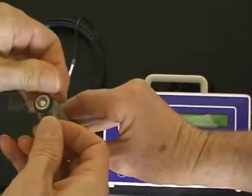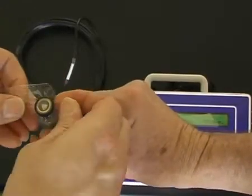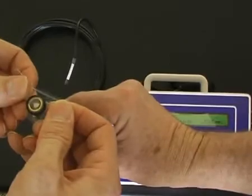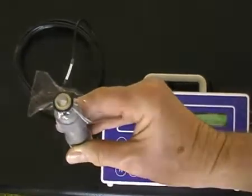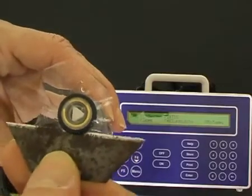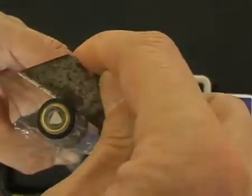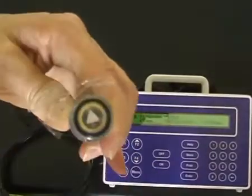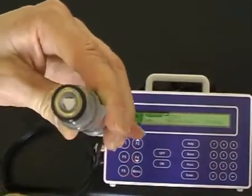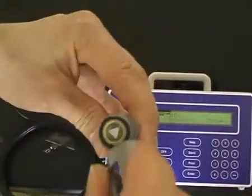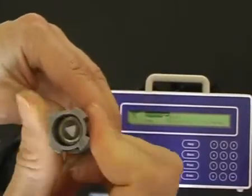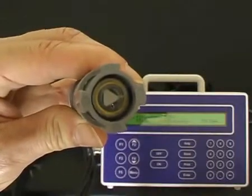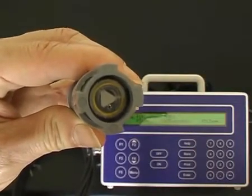Ensure there are no wrinkles in the membrane by stretching from the side and that there are no bubbles underneath the membrane. Then remove the excess membrane from the sensor with a utility knife blade and refit the guard. There should be no bubbles in the filling solution beneath the membrane.